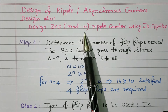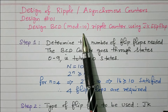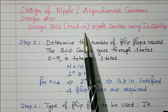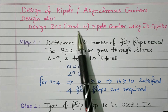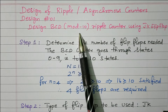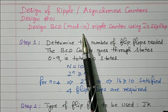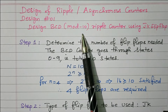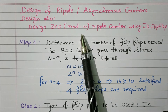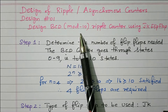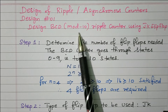Mod-10 counter means 10 outputs will be there — 0 to 9, so 10 combinations of output will appear. States 10 to 15, the remaining 6 outputs, will not appear. That is called a mod-10 counter — only 10 outputs. For example, mod-5 counter means 5 outputs will be there out of a total of 8 (2³); 5 will appear, remaining 3 will not appear.